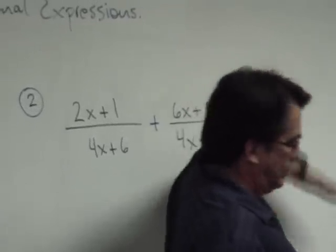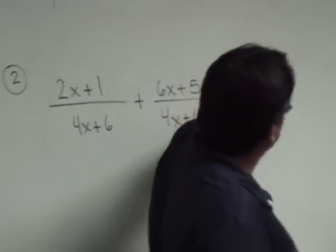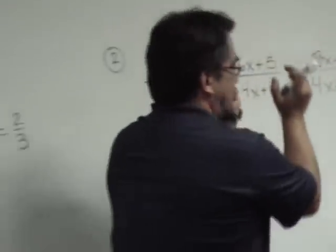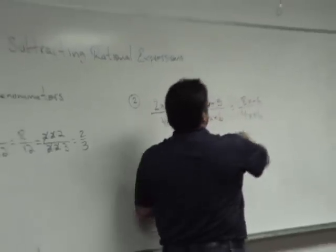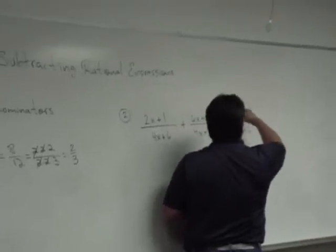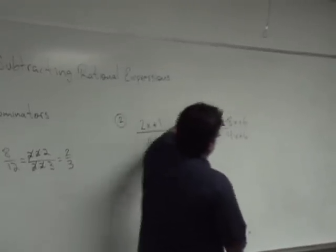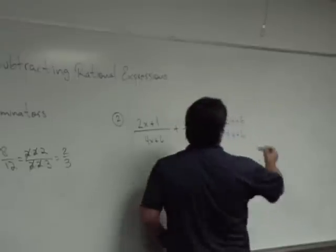You cannot cancel anything from the top or the bottom as long as you have an addition right here. You have to change that into factors. Something that you're multiplying. The 8x is being added to the 6, so you cannot cancel anything from that term. Nothing can cancel here until we have factored.